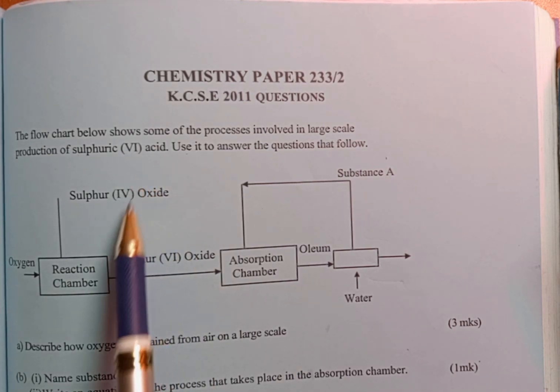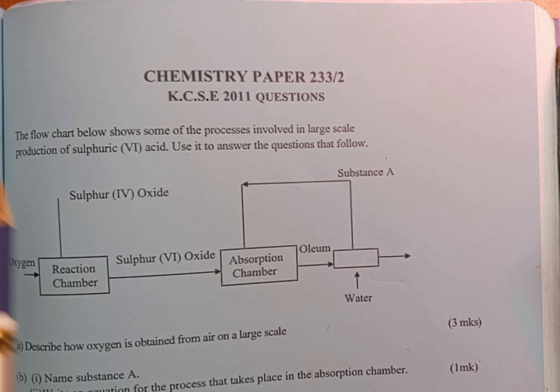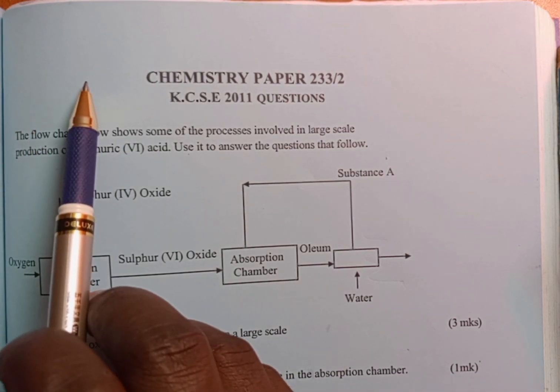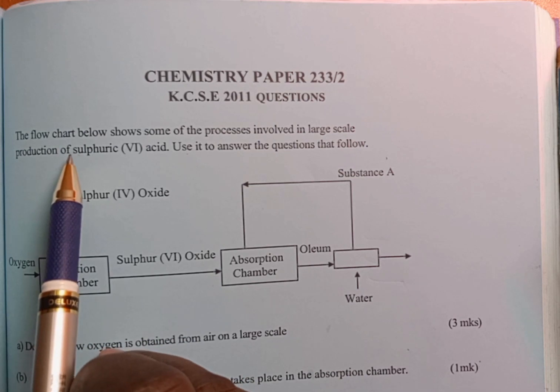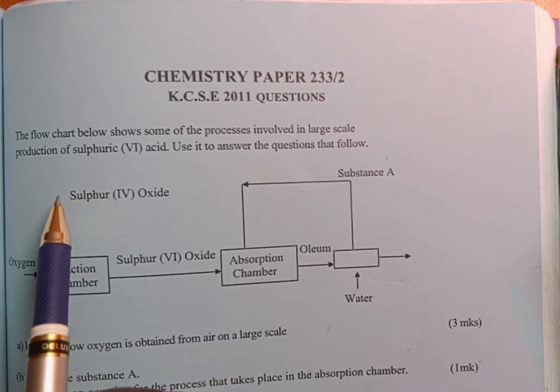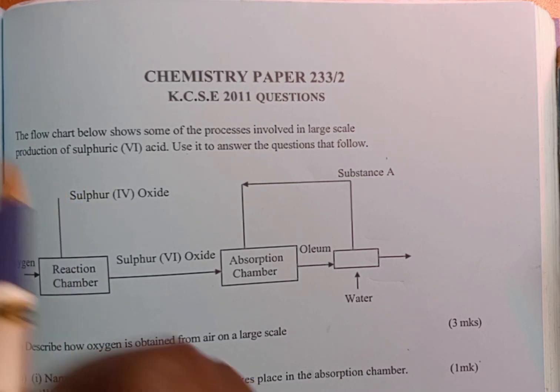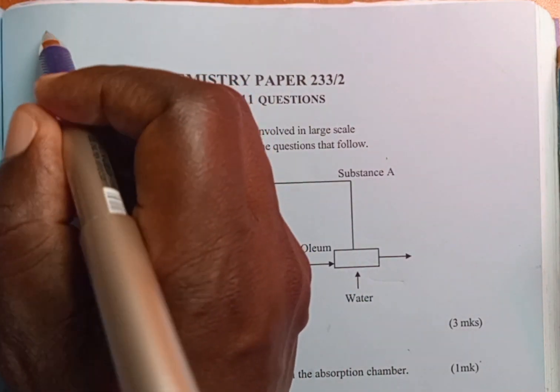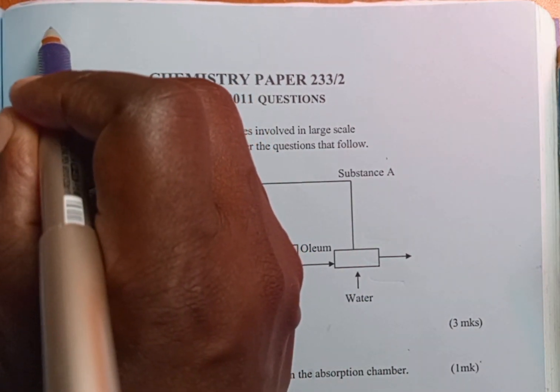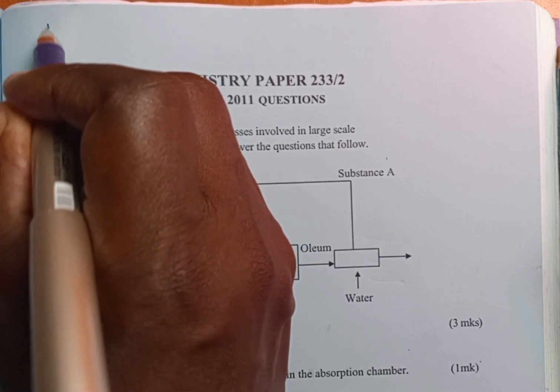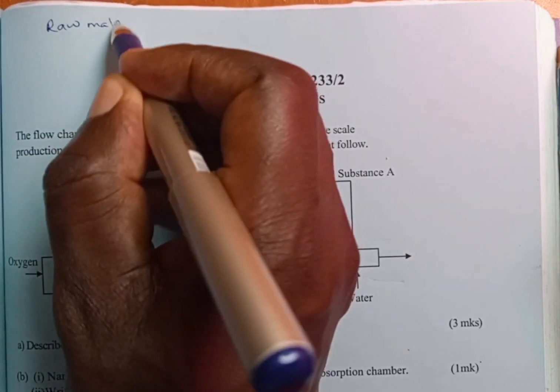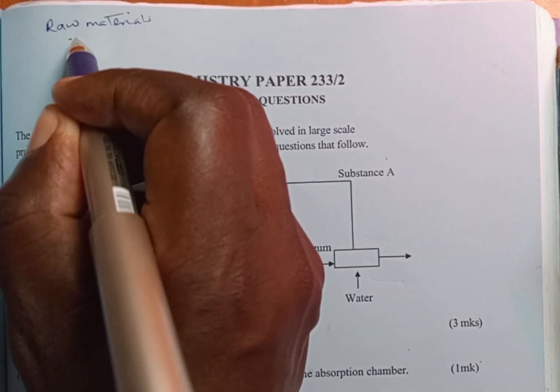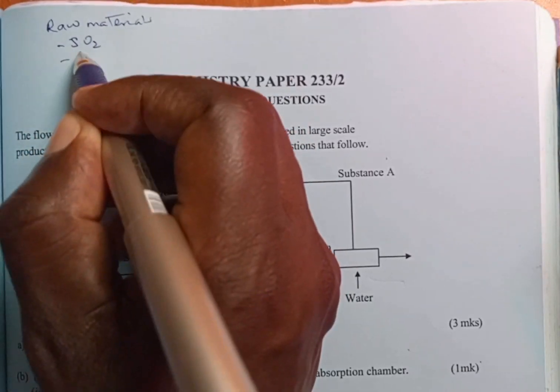Before we go through this flowchart, it is always important to understand how sulfuric acid is manufactured on large scale. For us to manufacture sulfuric acid, we need the following raw materials: sulfur dioxide and air.